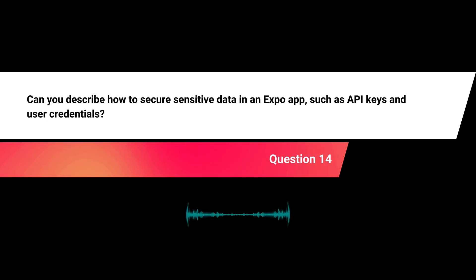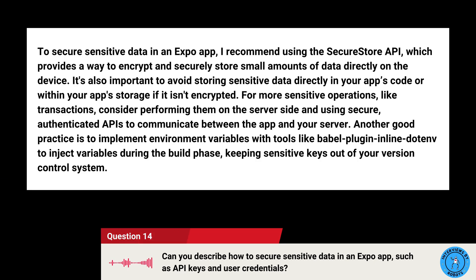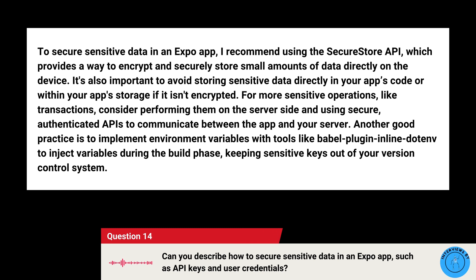Can you describe how to secure sensitive data in an Expo app, such as API keys and user credentials? I recommend using the Secure Store API, which provides a way to encrypt and securely store small amounts of data directly on the device. It's also important to avoid storing sensitive data directly in your app's code or unencrypted storage. For more sensitive operations like transactions, consider performing them server-side and using secure, authenticated APIs. Another good practice is implementing environment variables with tools like babel-plugin-inline-dotenv to inject variables during the build phase, keeping sensitive keys out of your version control system.